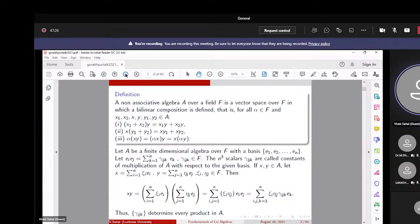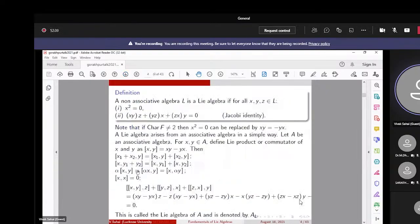Now, one can generate a Lie algebra from a given associative algebra. I am showing the process here. Let A be an associative algebra, and for x, y in A we are defining a new product, which we are calling as commutator or Lie product, by [x,y] = xy - yx. So first we will check whether with this product you have a non-associative algebra or not.